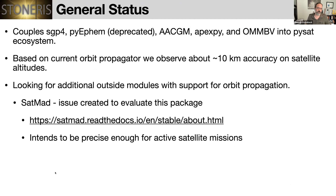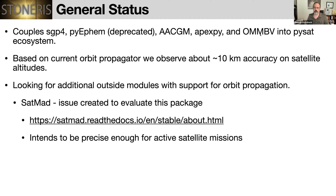Right now, the general state couples SGP4 as the propagator shown, and it also has support for PyFM, which is another propagating program that was open source. Our support for that is deprecated because PyFM is no longer actively maintained. It also couples a few community packages: AACGM (another magnetic coordinates package), ApexPy (magnetic coordinates and basis vectors), and OMMBV (a magnetic basis vector system). Based on SGP4 itself, we observe about 10-kilometer accuracy on satellite altitudes. We are looking for additional outside modules with support for more accurate orbit propagation.